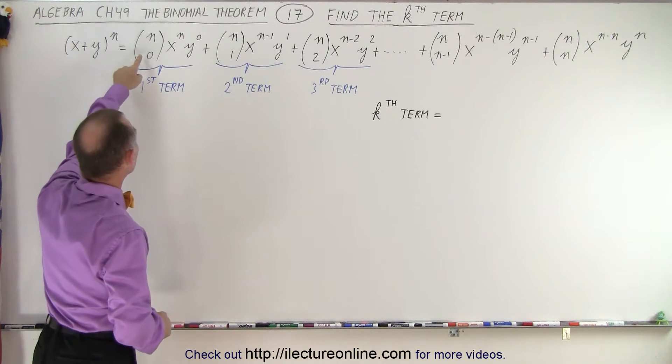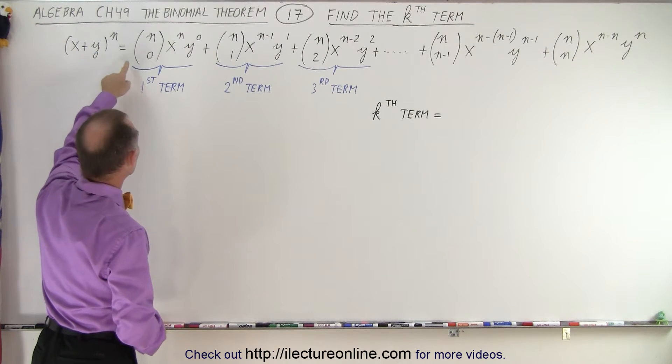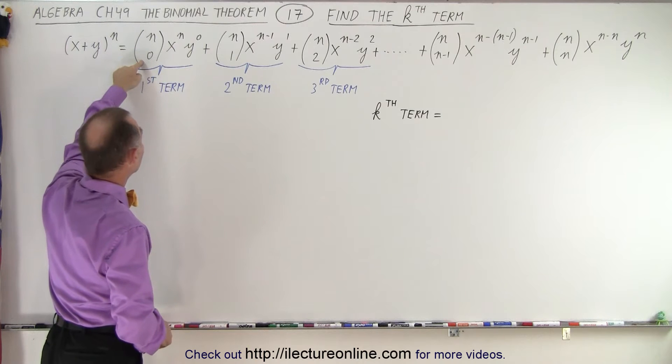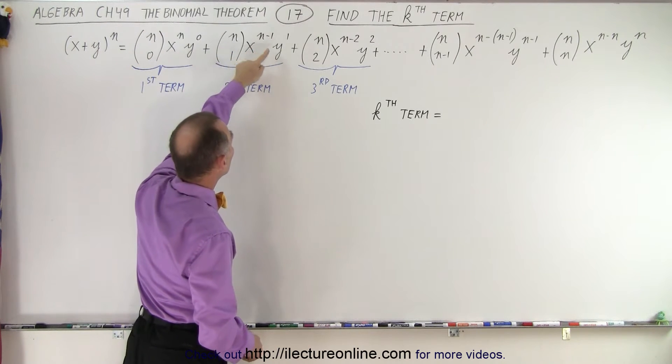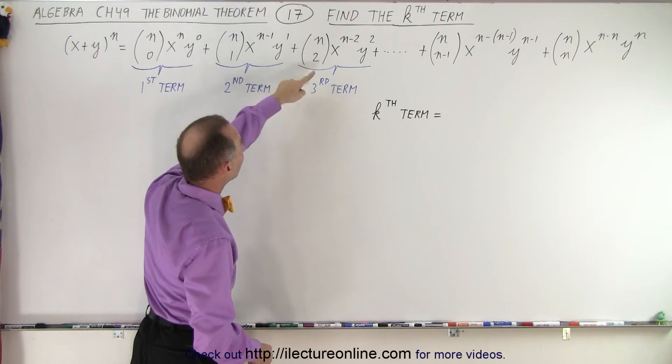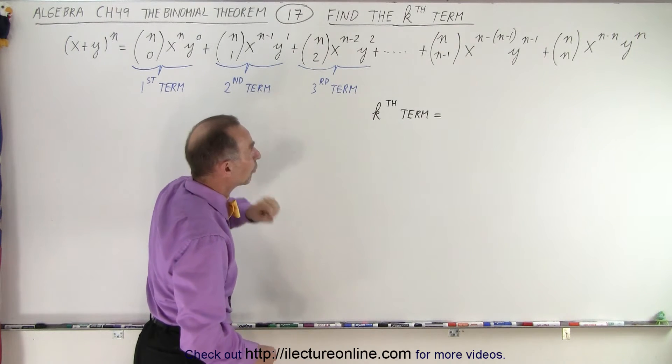So here you can see that to get the numerical coefficient, we have n choose 0, x^n y^0 for the first term, n choose 1, x^(n-1) y^1 for the second term, n choose 2, x^(n-2) y^2 for the third term, and so forth.